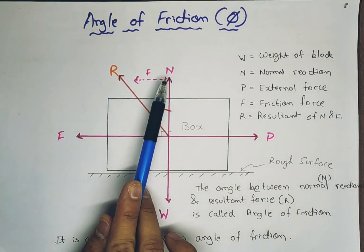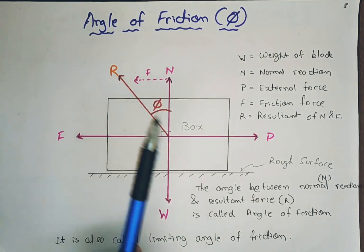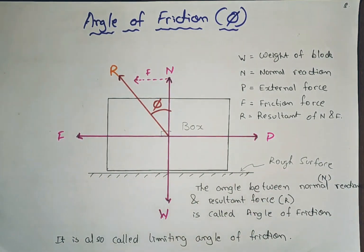The angle between the normal force and the resultant of F and N, that is resultant of frictional force and normal force. So the angle between normal reaction and the resultant force is called angle of friction.